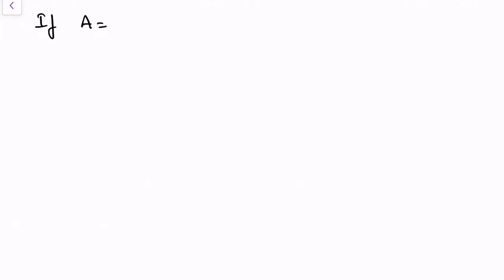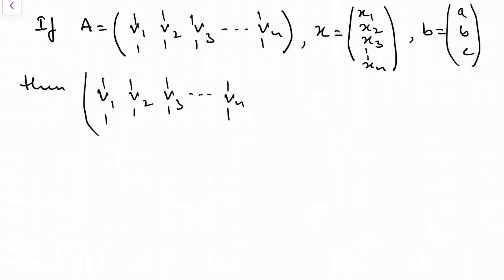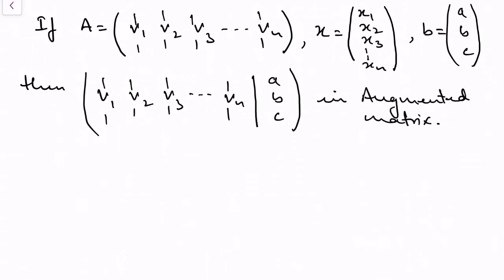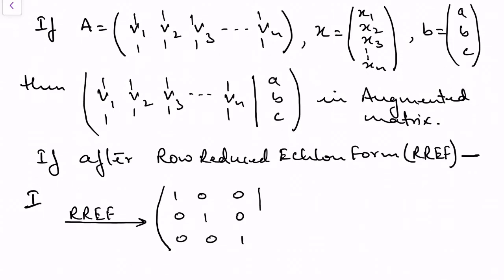Now if matrix A is [v1, v2, v3, ..., vn], x is [x1, x2, x3, ..., xn], and vector b is [a, b, c], then the augmented matrix is [v1, v2, ..., vn | a, b, c]. After performing row reduction to get the Row Reduced Echelon Form (RREF), we obtain a matrix.